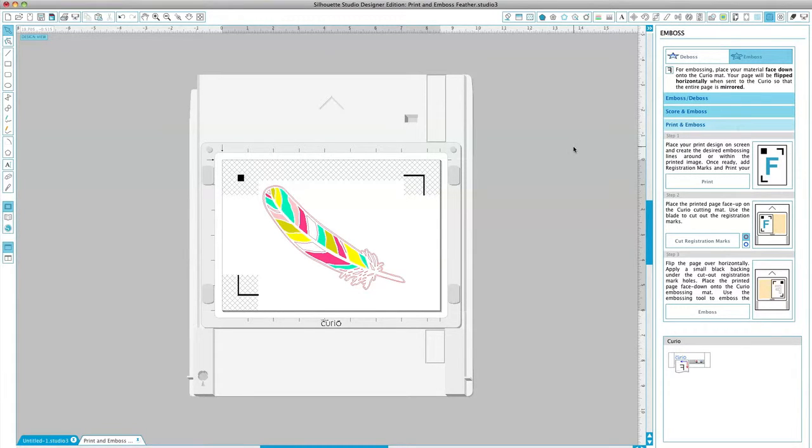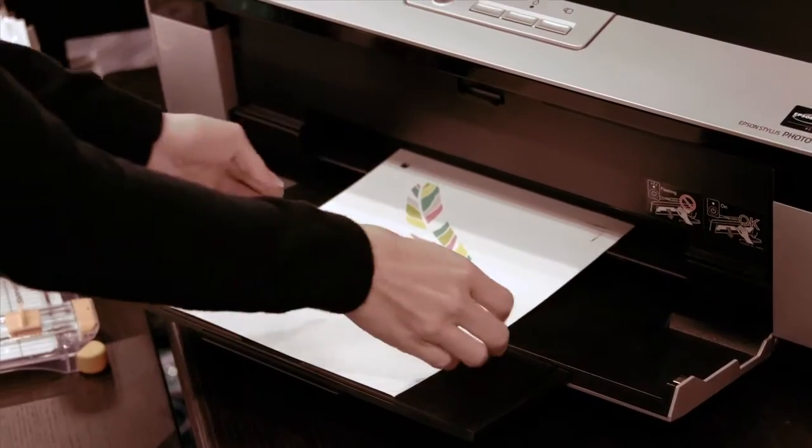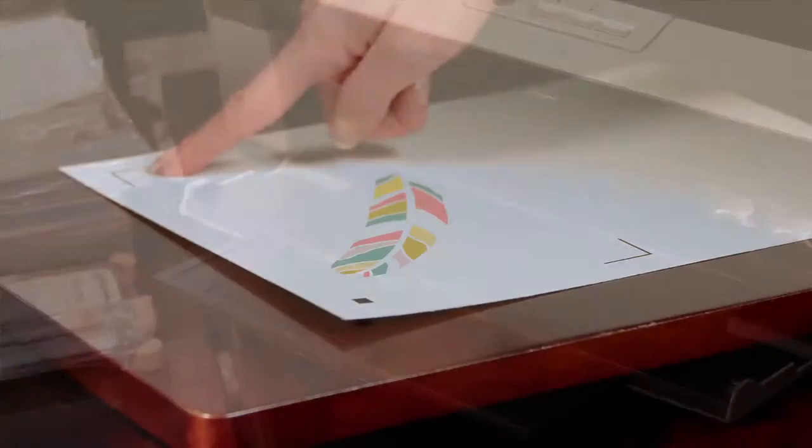In the emboss tool panel, under the print and emboss section, click print. This will send your design to your printer to be printed with registration marks.